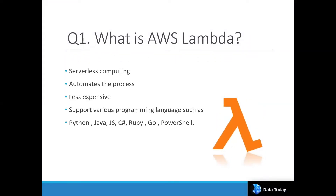Lambda is basically a serverless computing. It automates the process with the help of other services like S3, EC2, Athena, and others. It is very less expensive compared to EC2 or any other service because there you need to manage infrastructure. Here you just need to write up a Lambda function and it will start working, using any language like Python, Java, JavaScript, C#, Ruby, Go, and PowerShell — these are the languages it supports.